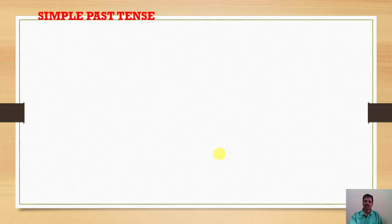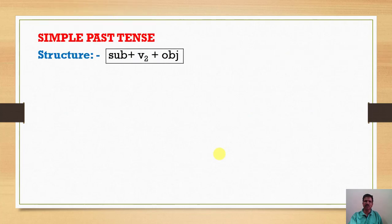Simple past tense structure: subject plus V2 plus object. We have to identify the answer in this format.